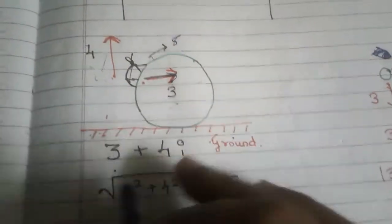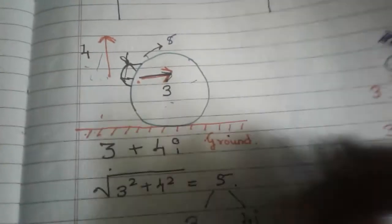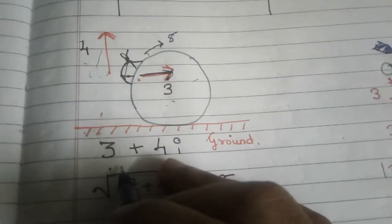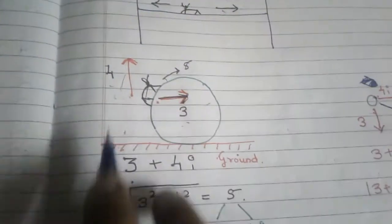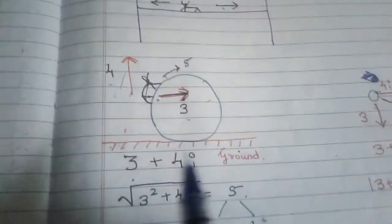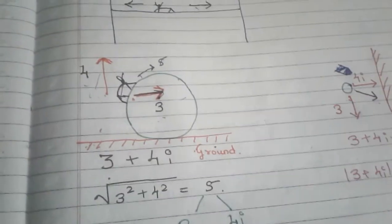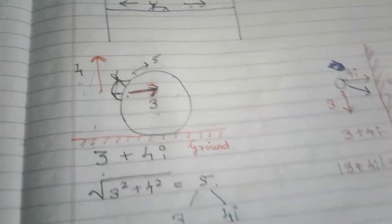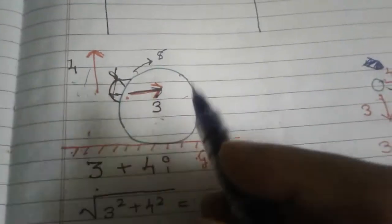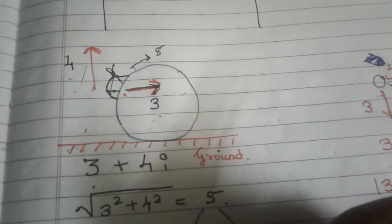In this case the reference surface is the ground. And that component which is perpendicular to the ground — the reference surface in this case — is called the imaginary component.